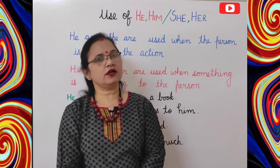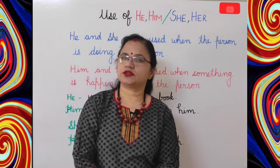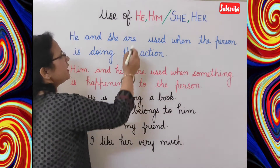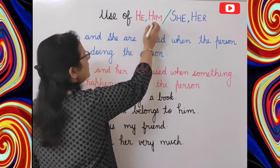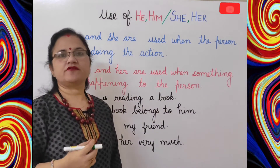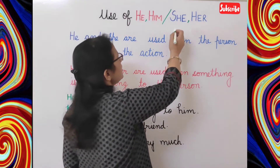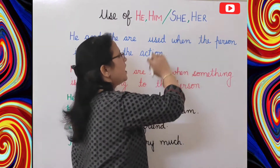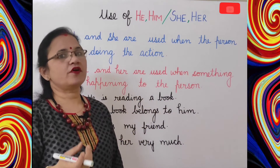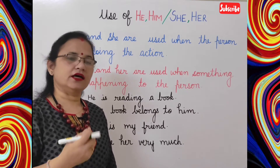He and him are used for masculine gender, for male persons. And she and her are used for feminine gender — for females we use she and her.